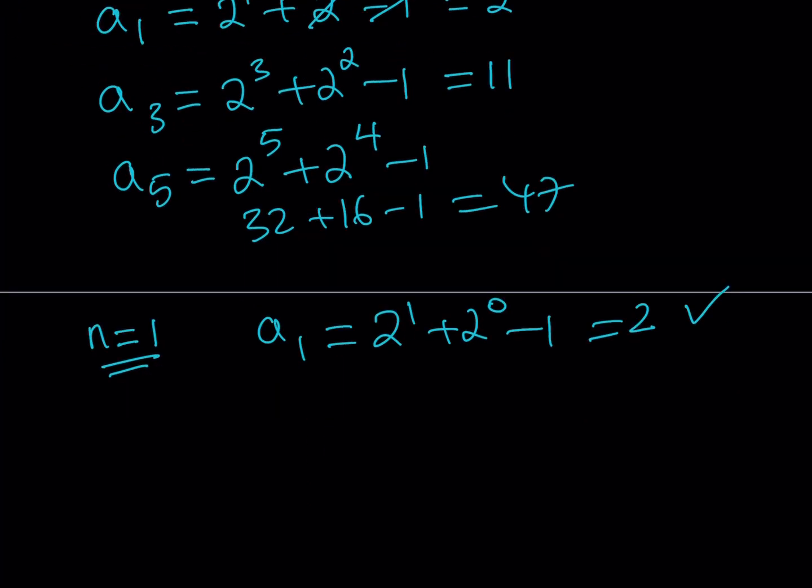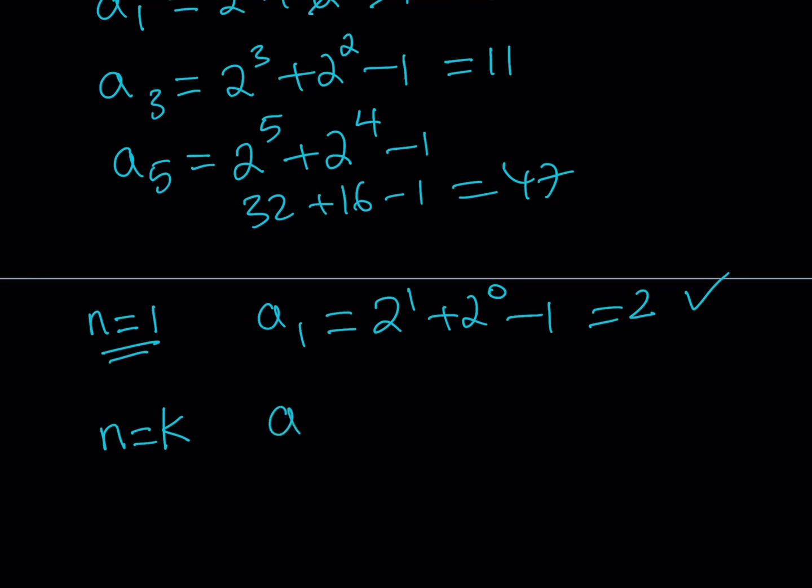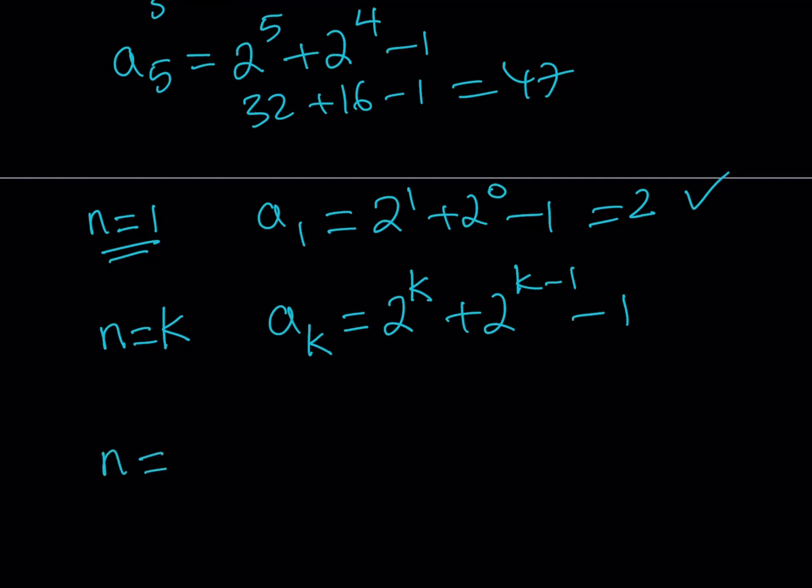For mathematical induction, I'm just going to assume that for n equals k, the formula works. This is an assumption. n equals k meaning that you're going to replace n with k and you're going to be getting a_k equals 2 to the power of k plus 2 to the power of k minus 1 minus 1. Now my goal is to show that this implies the case for n equals k plus 1, which should be a_{k+1} equals 2 to the power of k plus 1 plus 2 to the power of k minus 1.